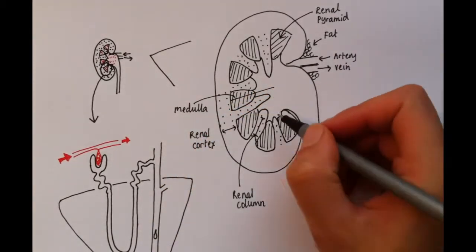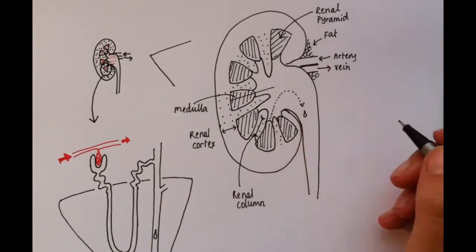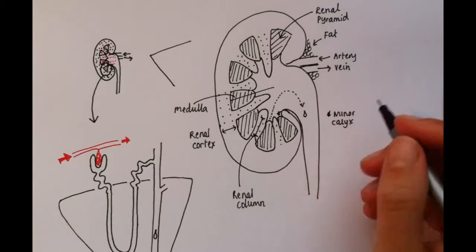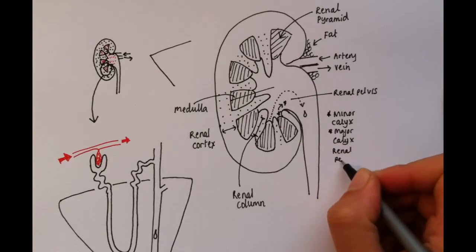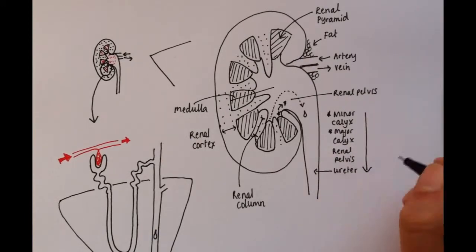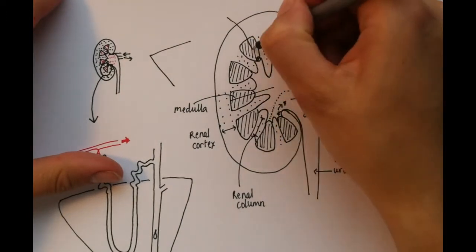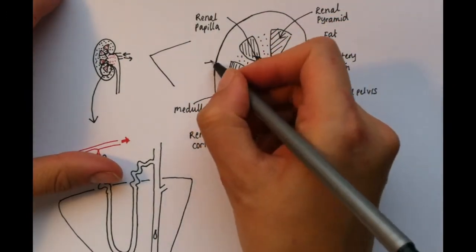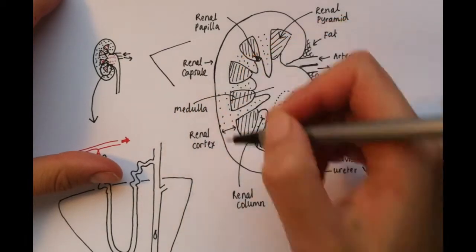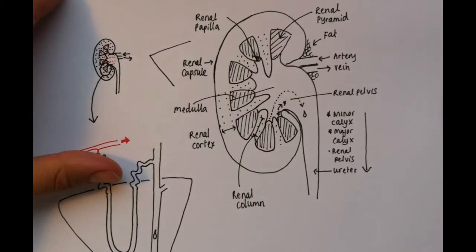Following the route of urine from the medulla, we see that they exit the pyramids into minor calyces, which are like funnels. These then drain into major calyces, and then into the renal pelvis. The renal pelvis is a direct continuation of the ureter. The apex of each renal pyramid, which drains into a minor calyx, is called the renal papilla. And the outer layer of the kidney is called the renal capsule. This is a tough, fibrous layer.